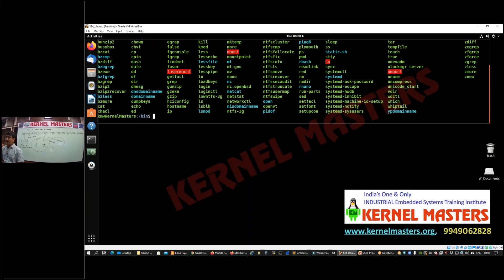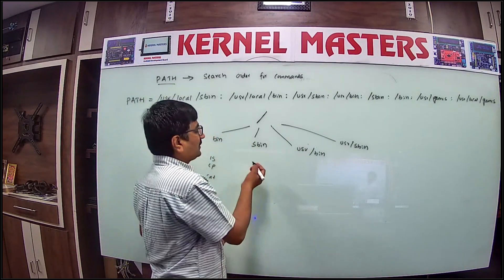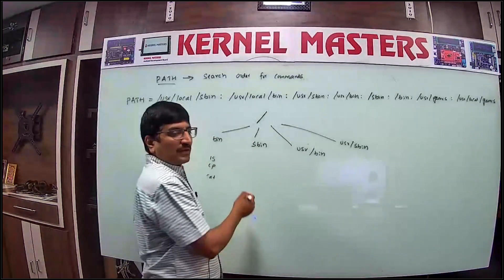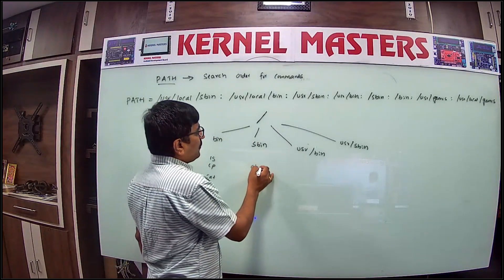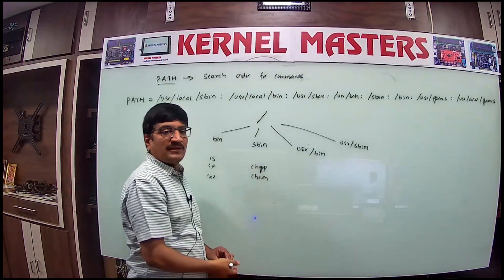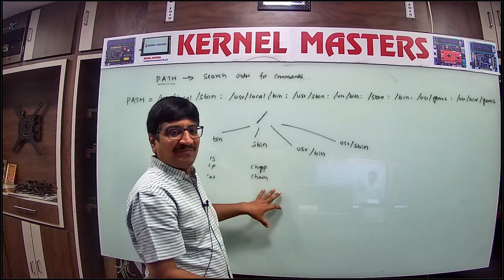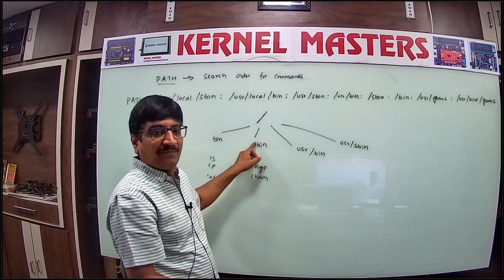In Linux, the /usr/bin folder contains user commands — for example, ls, copy, cat — all user commands are generally in the bin folder. The /sbin folder contains admin commands. Admin commands include things like chgrp, chown, mount — administration-related commands are in sbin.